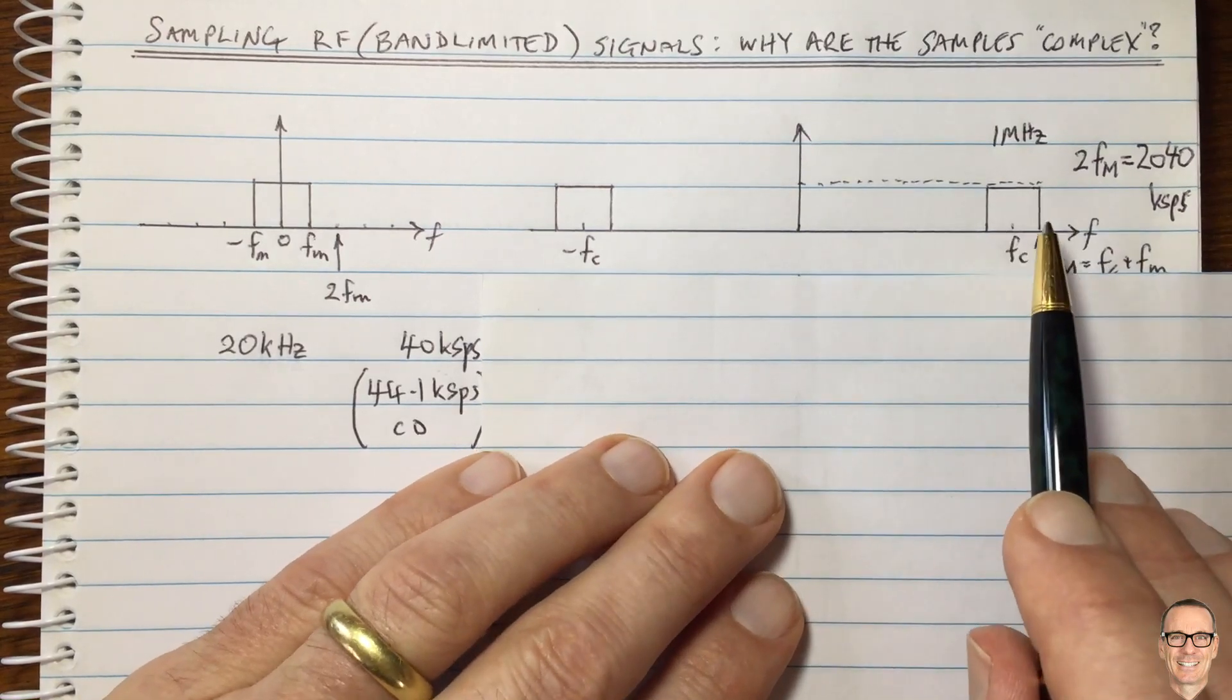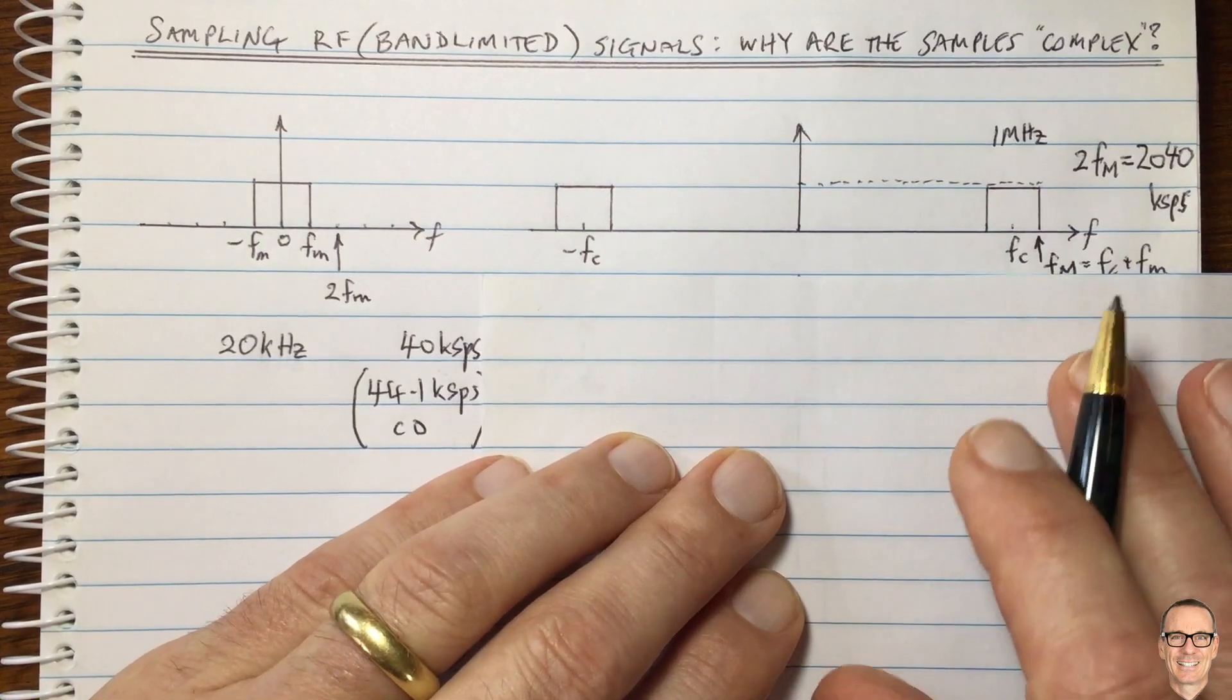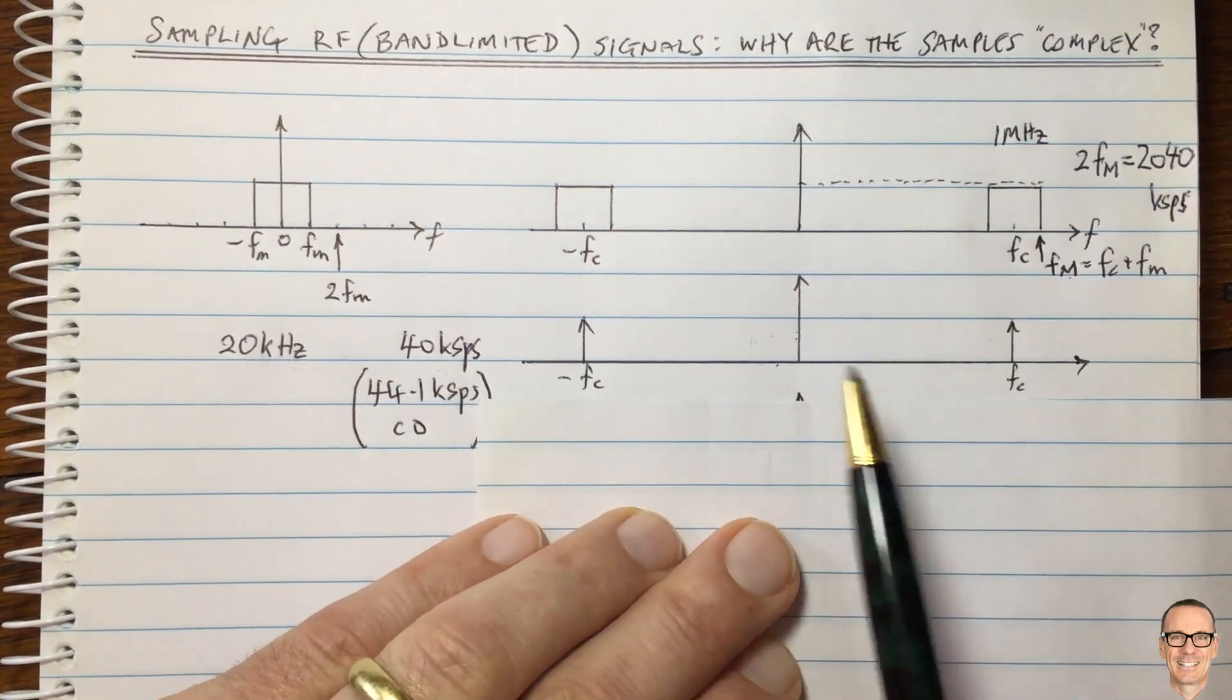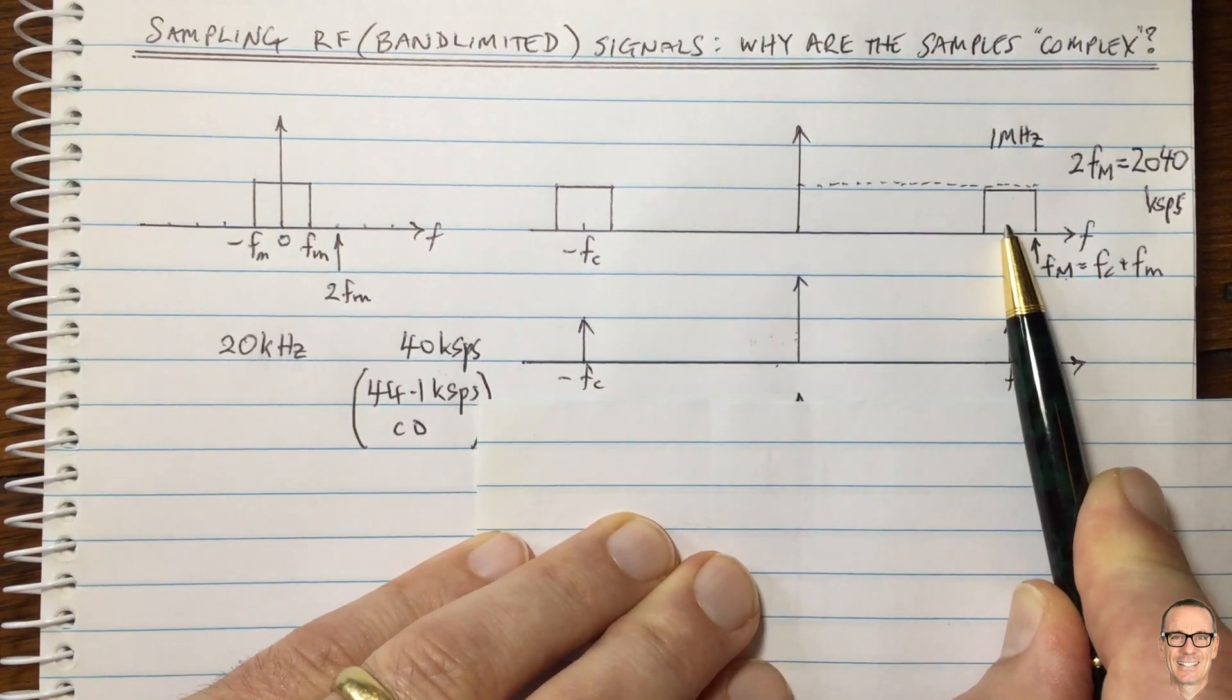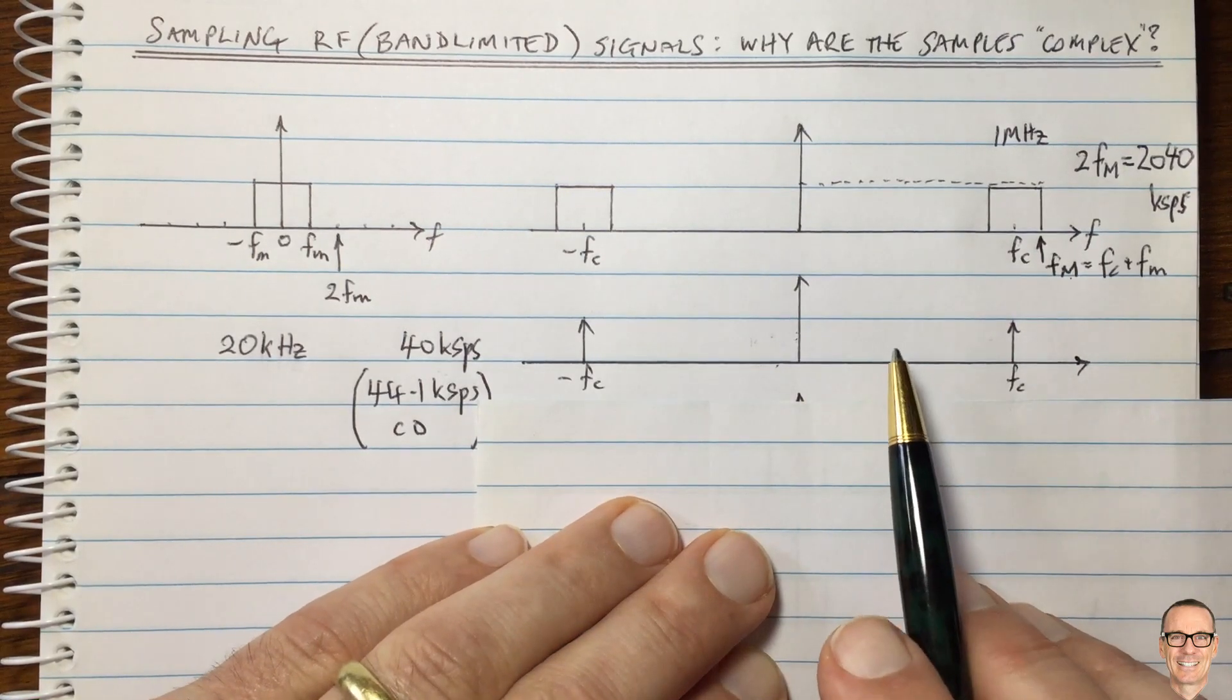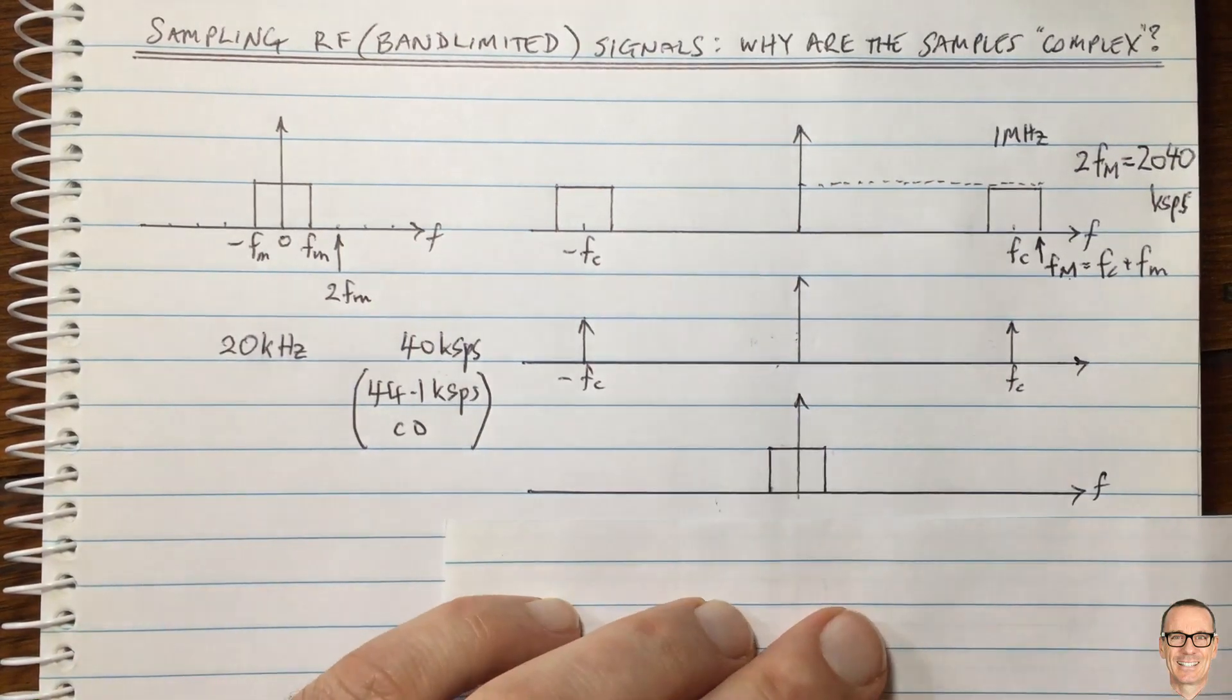So what we can do is we can demodulate the signal using sinusoidal waveforms. So again, check out the AM video on the channel that explains AM modulation and demodulation. But here I'm showing what happens. We multiply our signal by a cos wave at the carrier frequency. And we know from signals and systems, if you multiply in the time domain, then you convolve in the frequency domain to give us this function here.